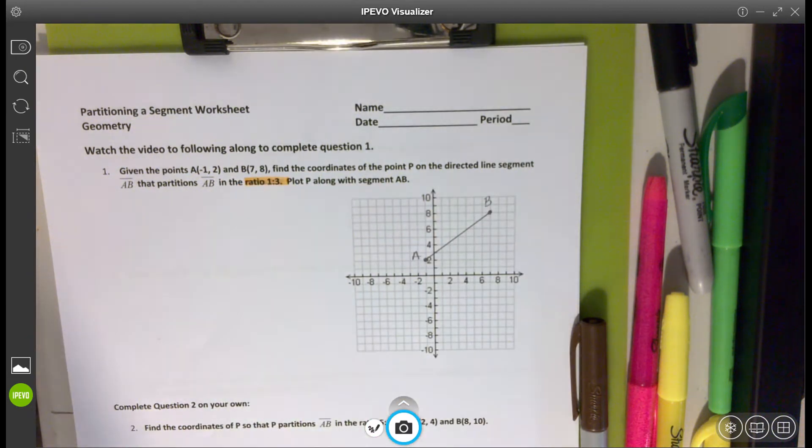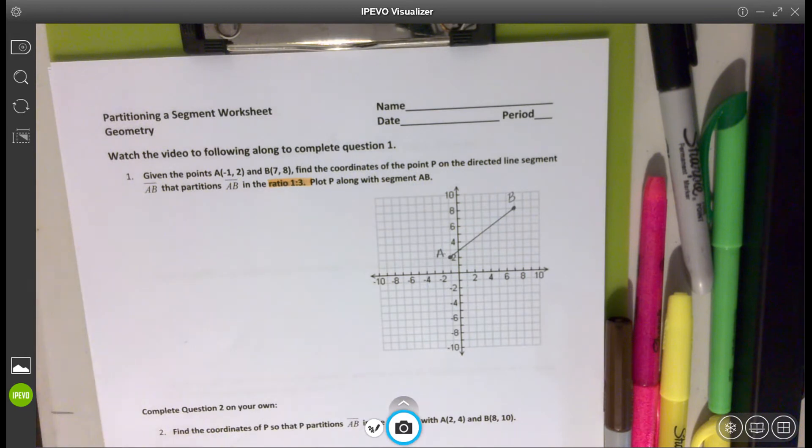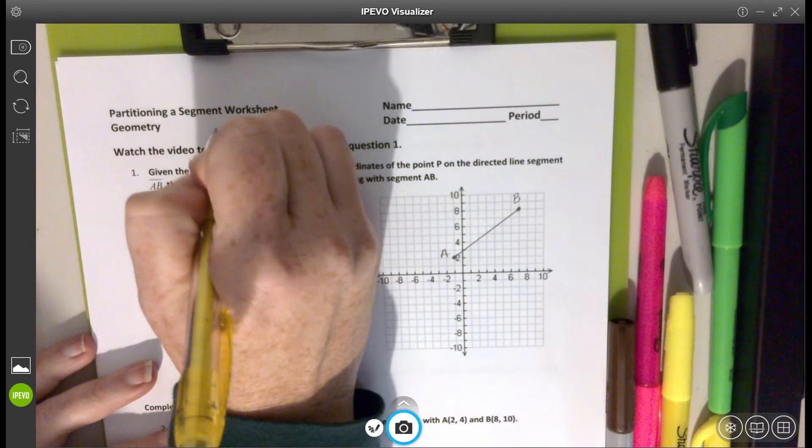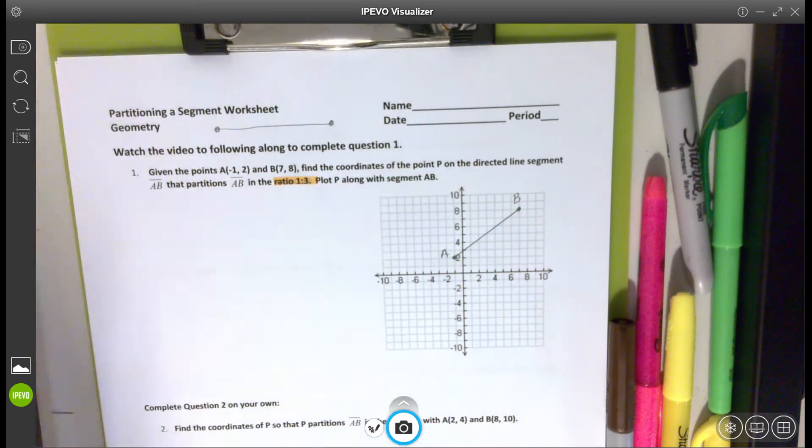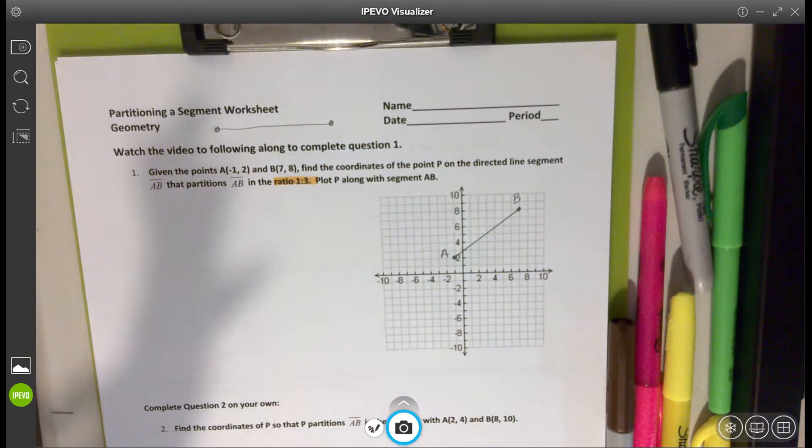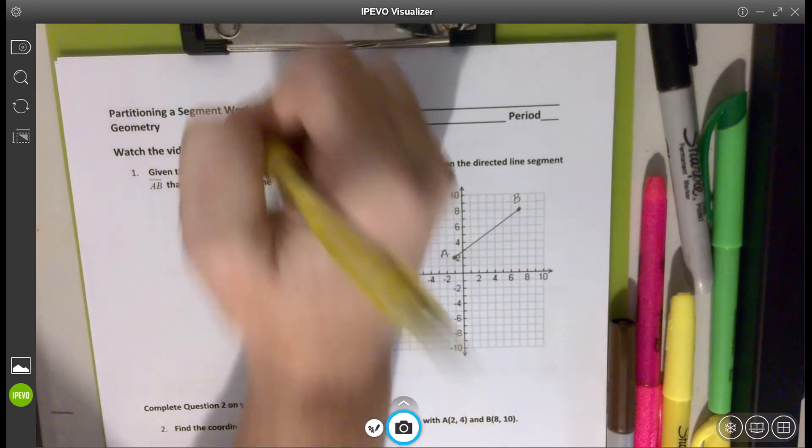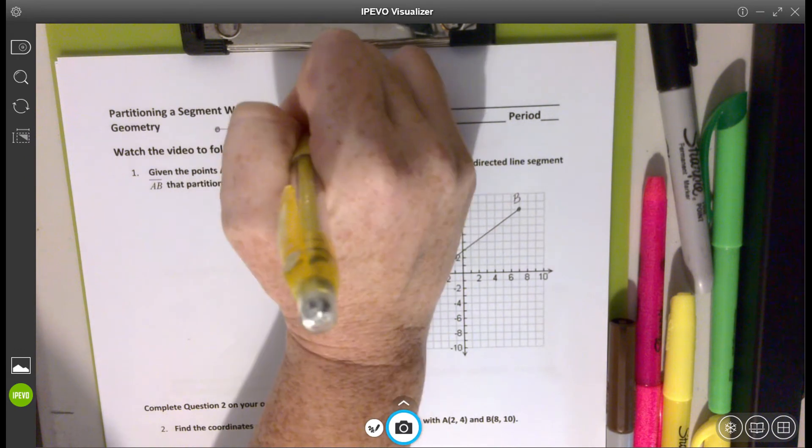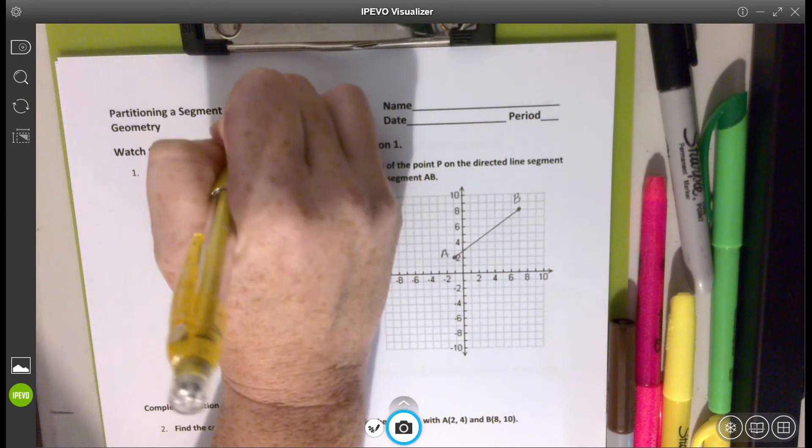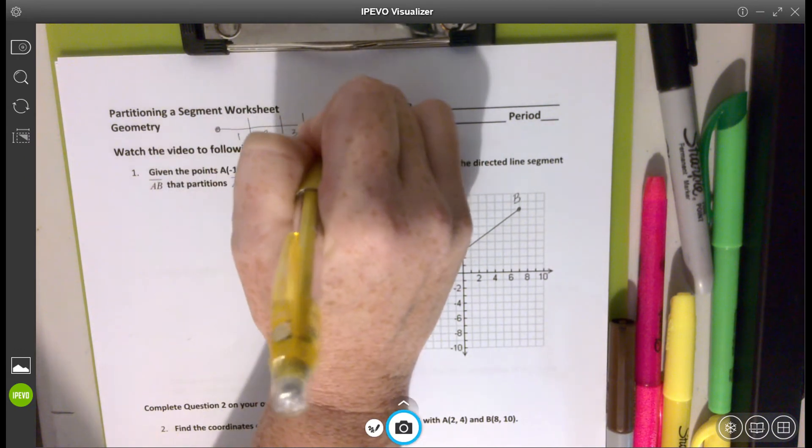So ratio one to three is really important. We want to cut our segment. I'm going to actually just draw a segment up here. We want to cut our segment one to three. So what that's going to look like is we have four pieces: one, two, three, four pieces.